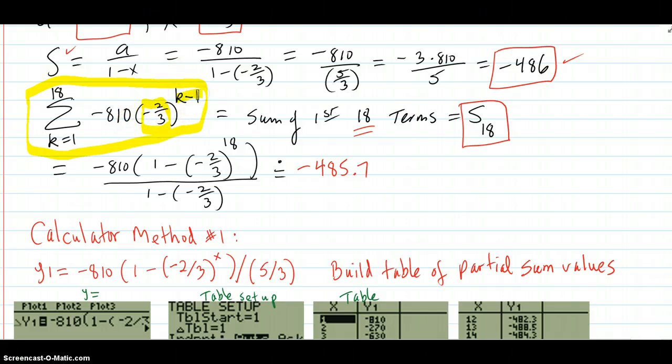Why is there a k minus 1 here? Because since we're starting the summation with k equals 1, you can see that when k equals 1 and you put it in here, you'll have 0 up in the exponent. Negative 2 thirds to the 0 is 1, and you'll just get your first term negative 810.